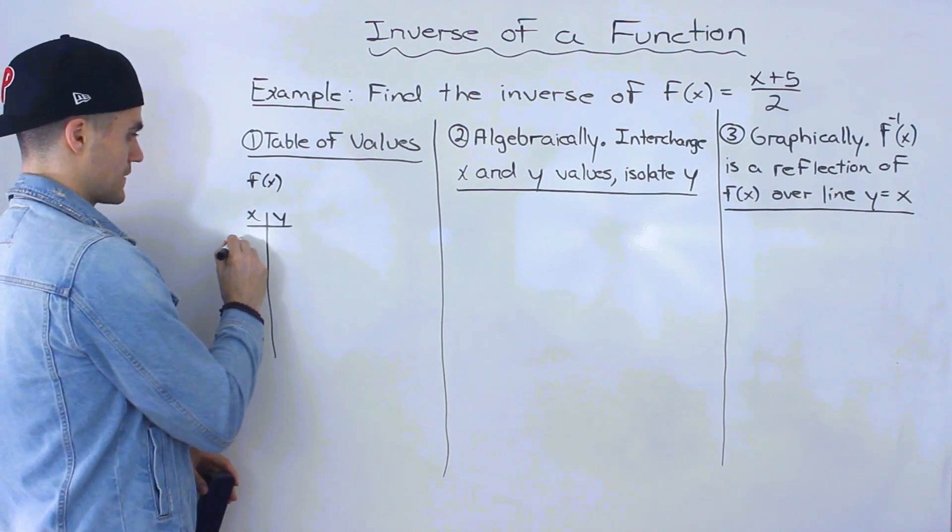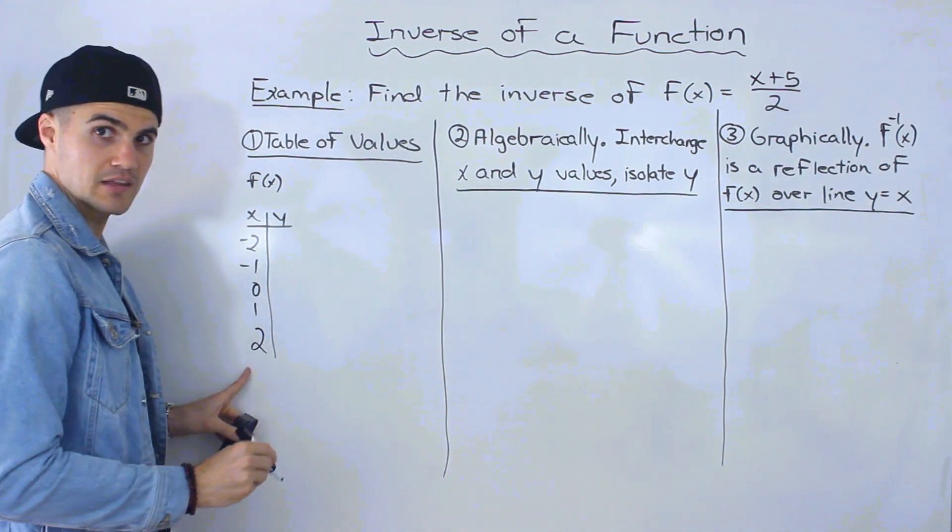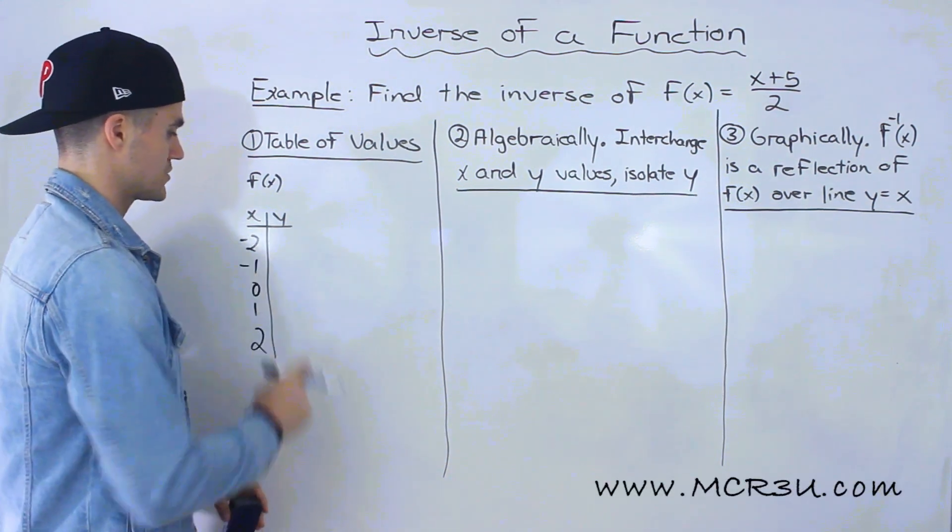And let's pick x values: negative 2, negative 1, 0, 1, 2. It doesn't necessarily have to be these. You could pick whatever you want, but I'll just stick to these for now.